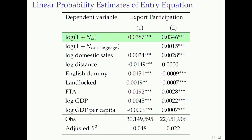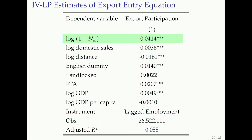Using a linear probability model for the extensive margin, the marginal effects show a positive effect of increasing immigrant employment on the probability of exporting to a destination. The language effect is present again — immigrants with a certain language skill provide benefits even if they're not from the destination country. The lagged immigrant instrument also gives a positive and significant effect.